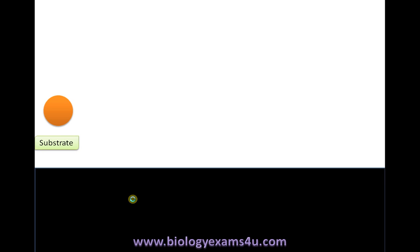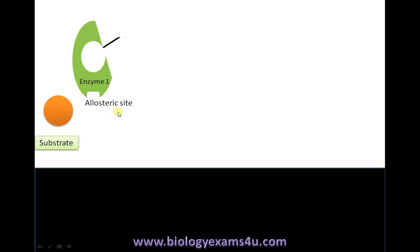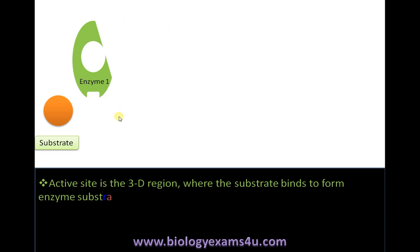Let's start with an example. Suppose this is a first substrate and we have the enzyme. In an enzyme there are two sites: one is called the active site, where the substrate binds, and the other is called the allosteric site. The active site is the three-dimensional region where the substrate binds to form the enzyme-substrate complex.